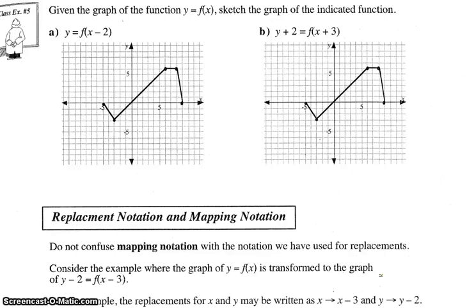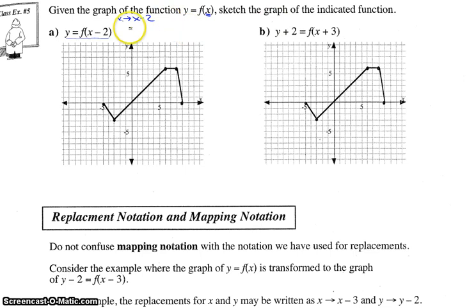We're on the last page of this lesson. Given the graph of the function y equals f of x, sketch the graph of the indicated function. For y equals f of x minus two, x was replaced with x minus two — that is a movement of right two units. You're going to move each of these points right two units, connect the dots, and there we go — every point goes right two units.